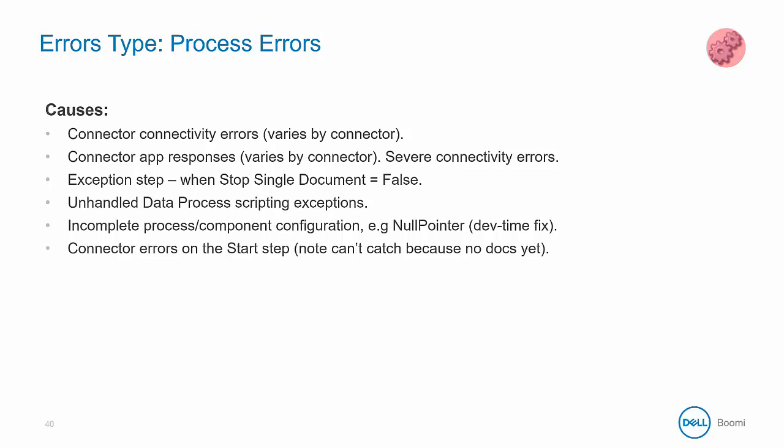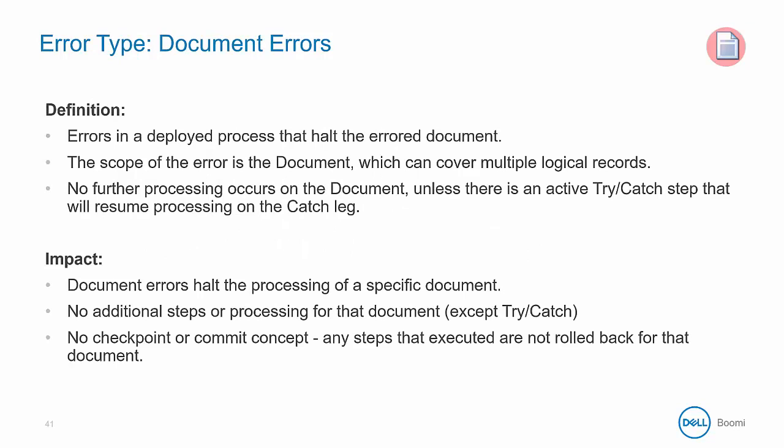That means nothing will continue down the process since there are no documents. The next type of error is a document error. These errors halt the error document and the scope is confined to just that one error document, though keep in mind that a single document could itself have multiple logical records within it. The document is not acted upon anymore unless there is a try-catch shape set up, in which case the document will travel down the catch path. The impact is limited to just that one error document.